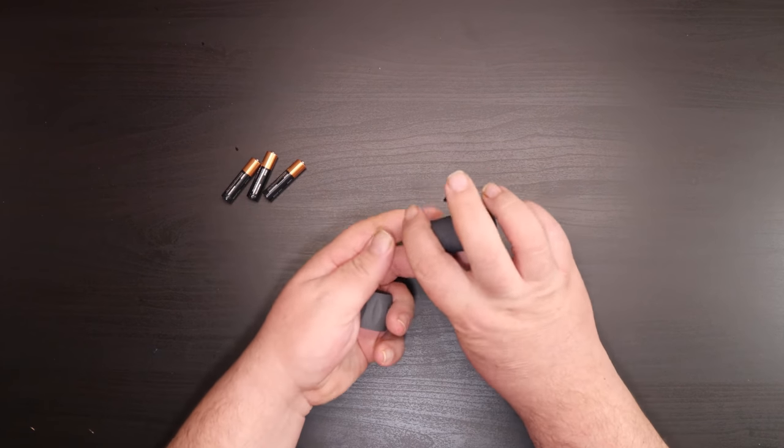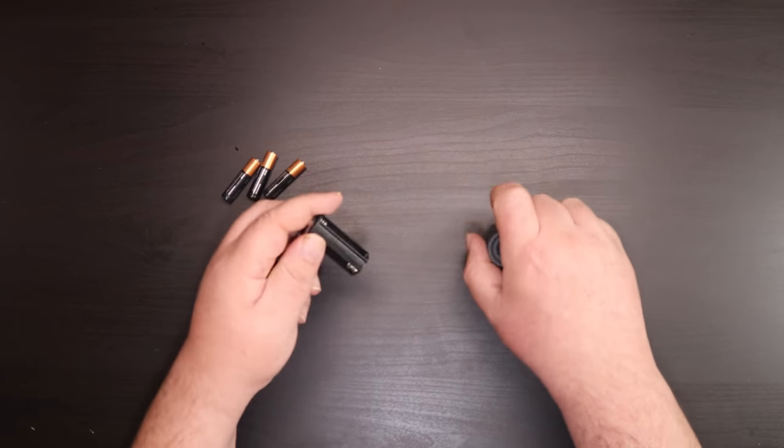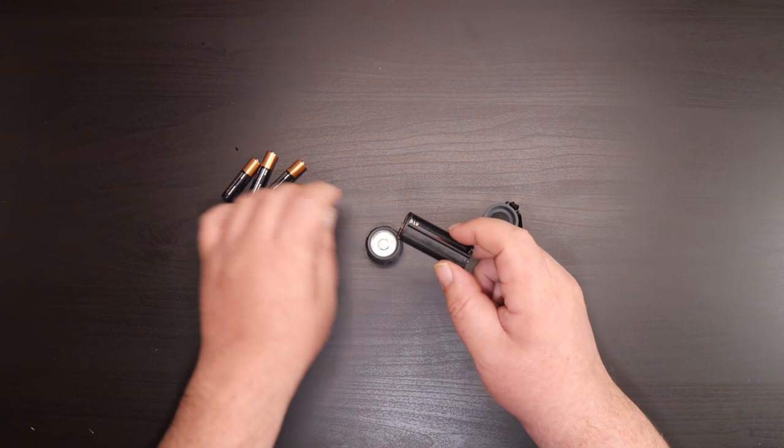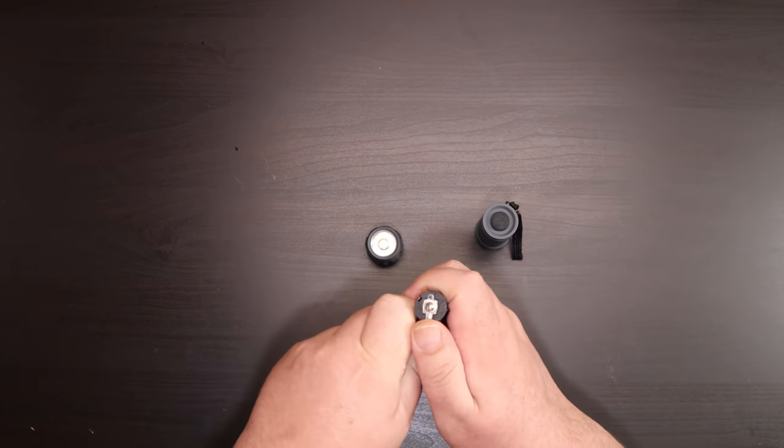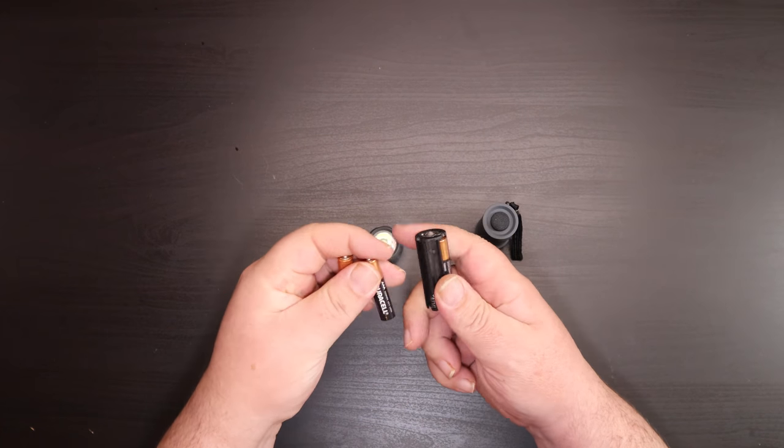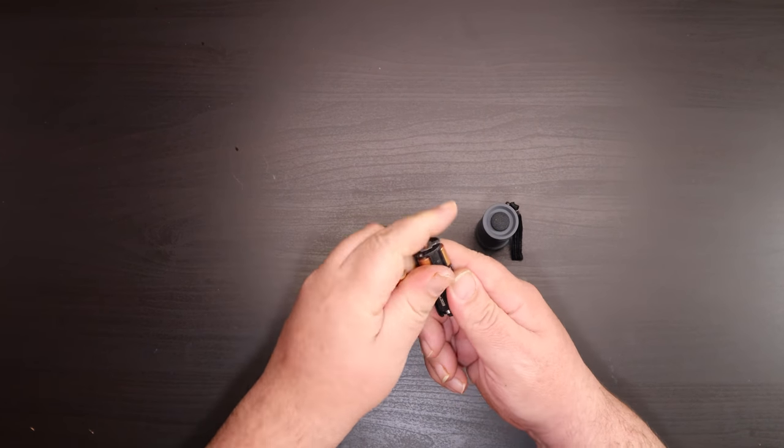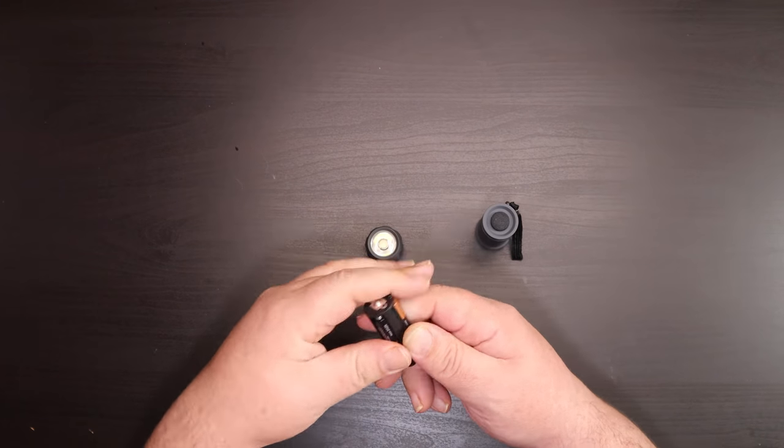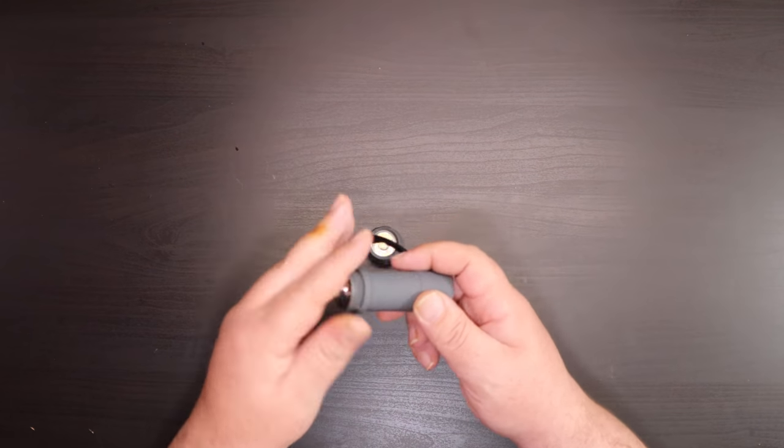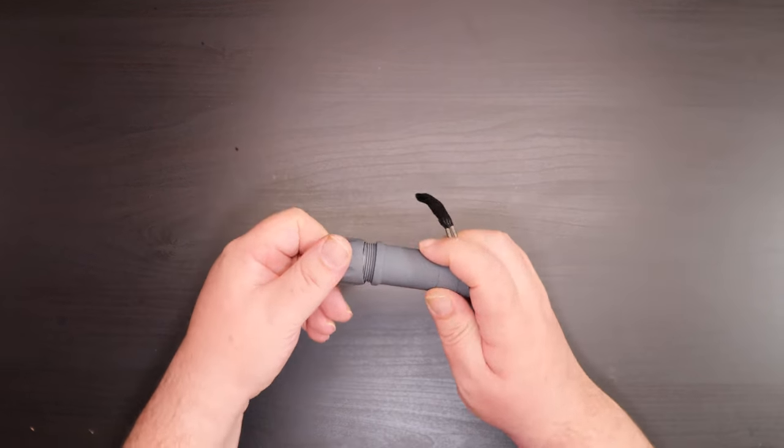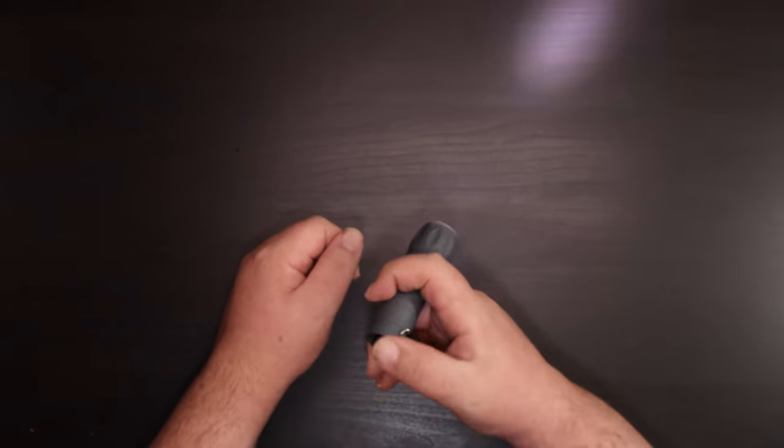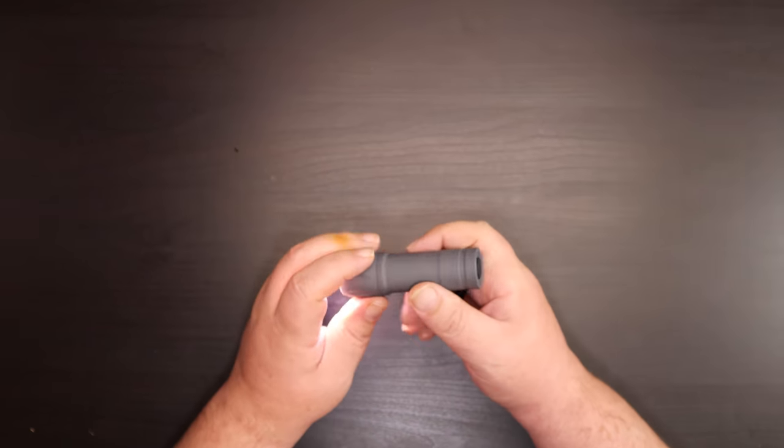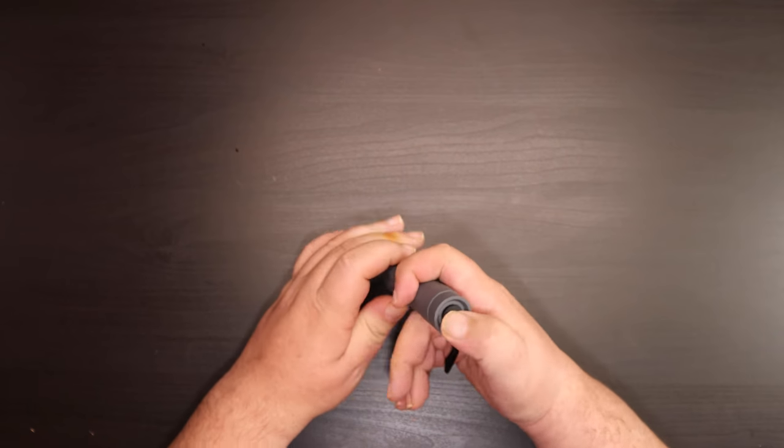The idea is to make this light stick the most economical that we can. This one here takes three triple-A batteries and you'll get a couple hours out of the three batteries. Again, these are dollar store flashlights, so make sure it works before you assemble your light wand.